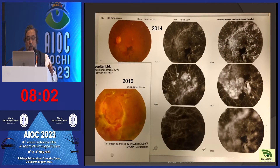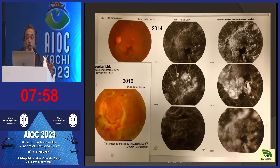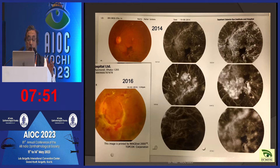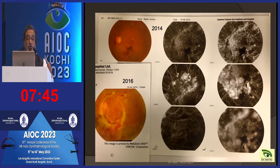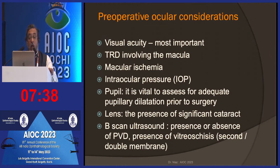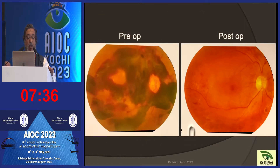In this particular case, this patient came to us in 2014 — a frank case of PDR. The patient was lost to follow-up and didn't do any treatment. After two years, the membranes had formed and the eye went into blindness. We must remember that we must intervene early. In 2014, if a vitrectomy or good laser had been done, we could have avoided blindness in this case.